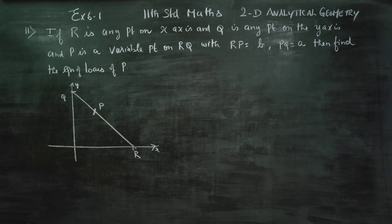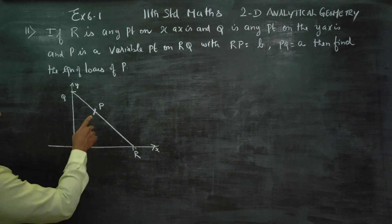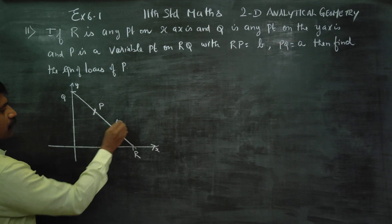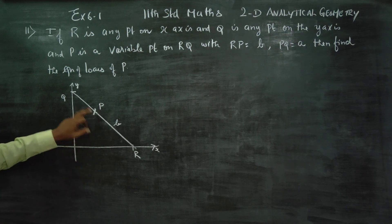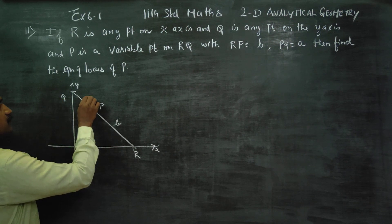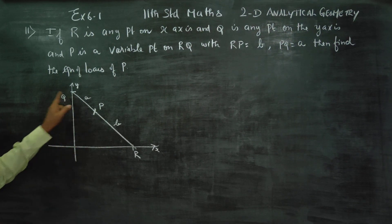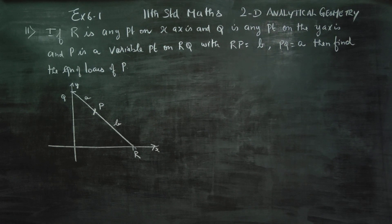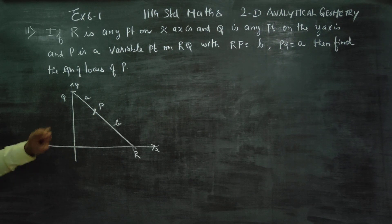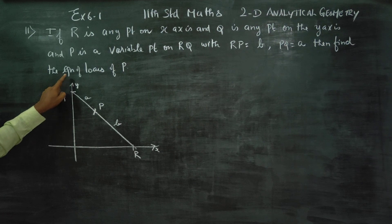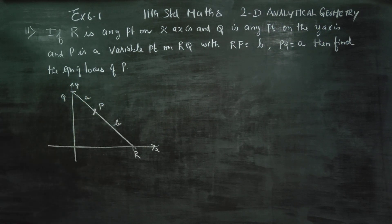Let's define P's position. RP is equal to B, and PQ is equal to A. Okay, fine. We need to find the equation of the locus of P.